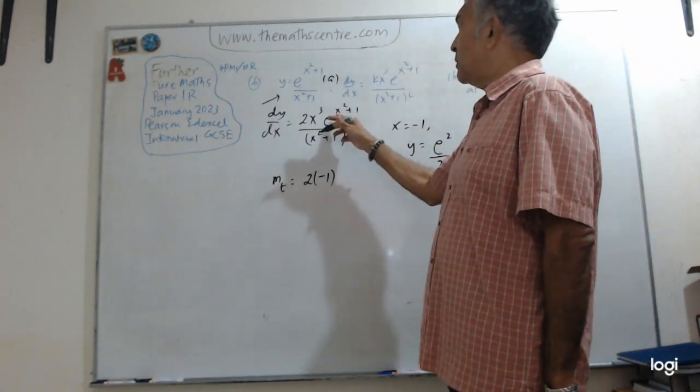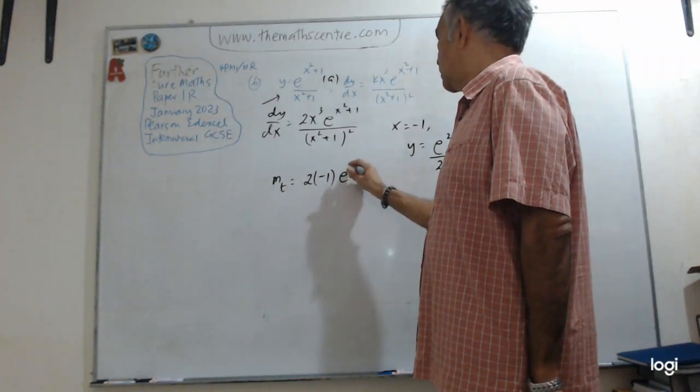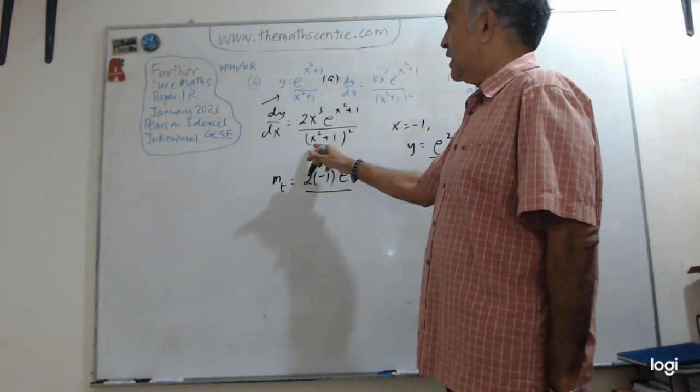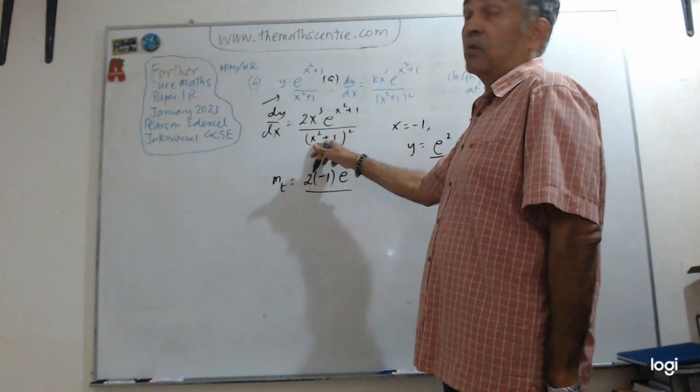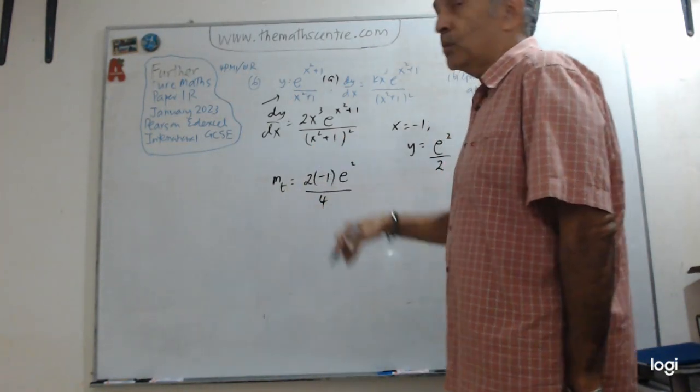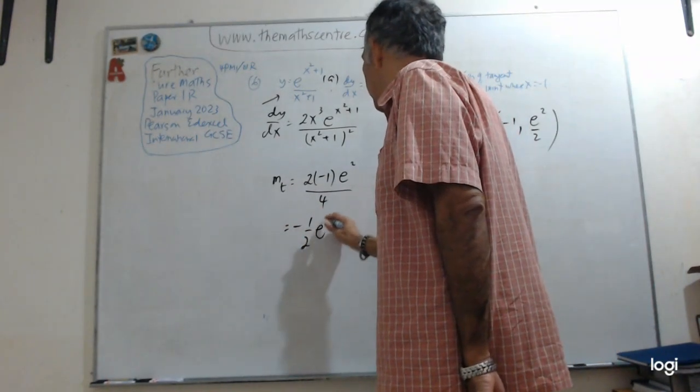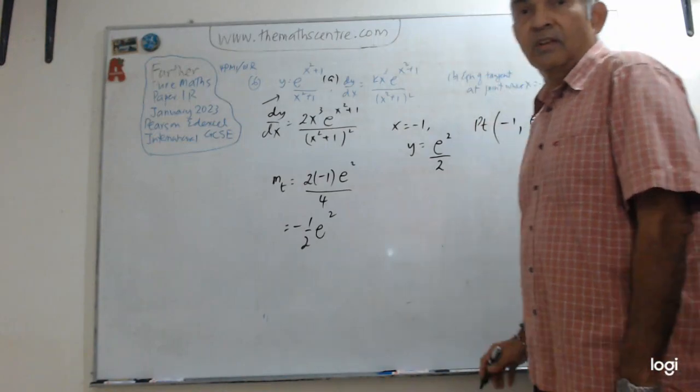e to the power of—remember x is minus 1—minus 1 squared, 1 plus 1 is 2. Same thing. What do you have here? This minus 1 squared is 1, 1 plus 1 is 2, 2 squared is 4. So this 2 and the 4, let's get rid of that. And I have -e²/2.